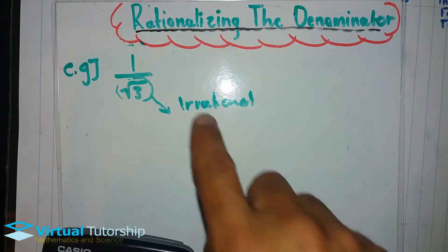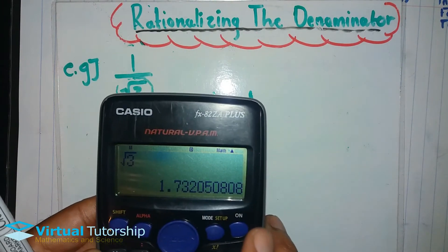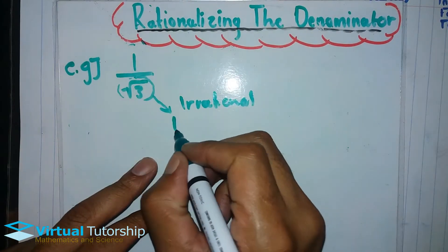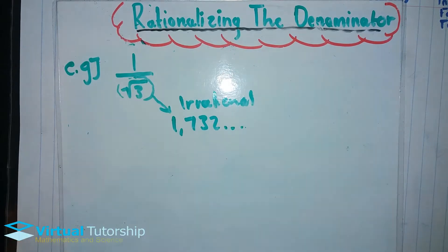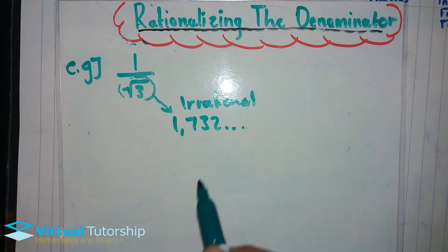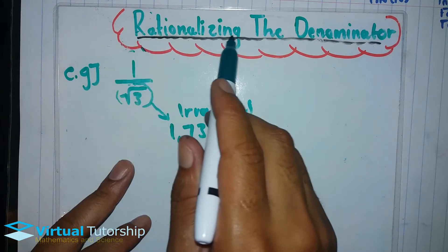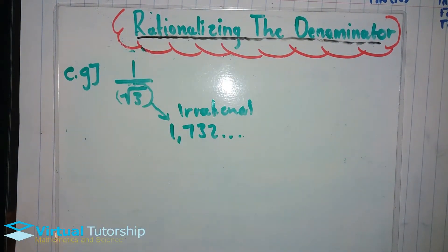The square root of 3 is 1.732. By default, the square root of 3 is an irrational number. So we will rationalize the square root of 3, which is in the denominator.